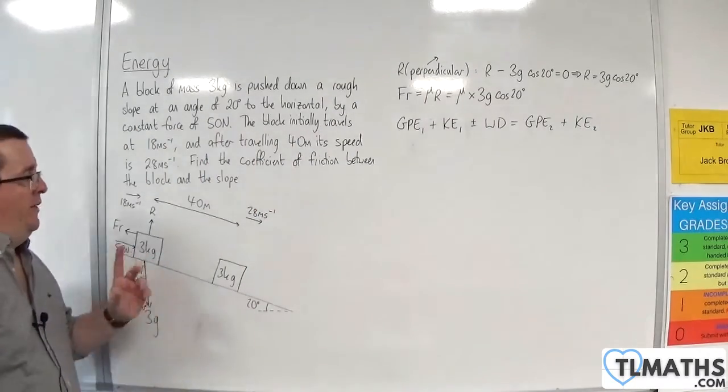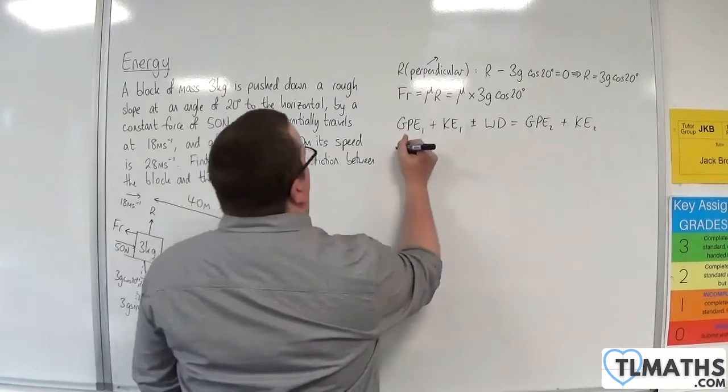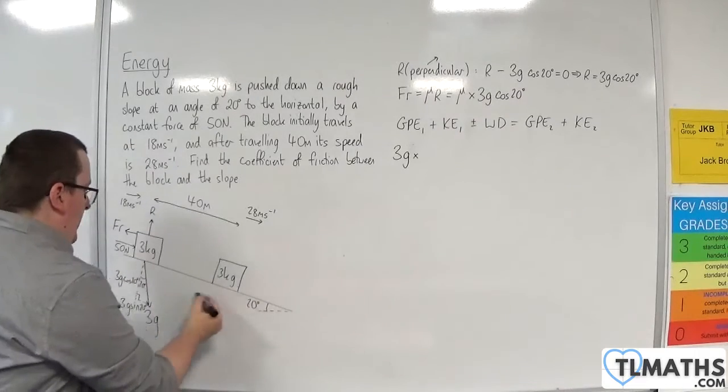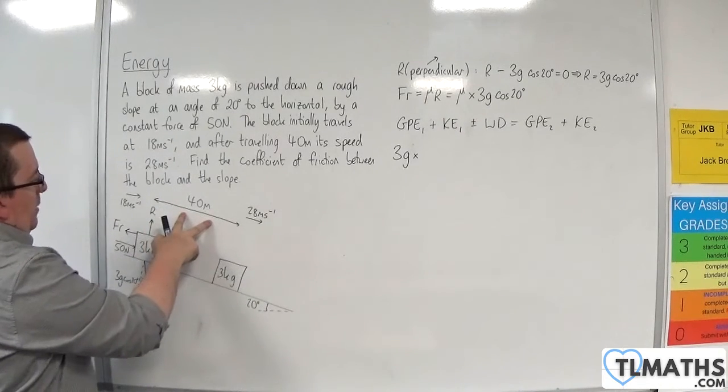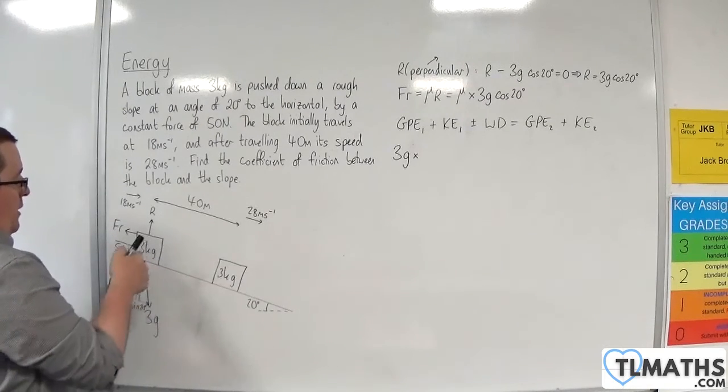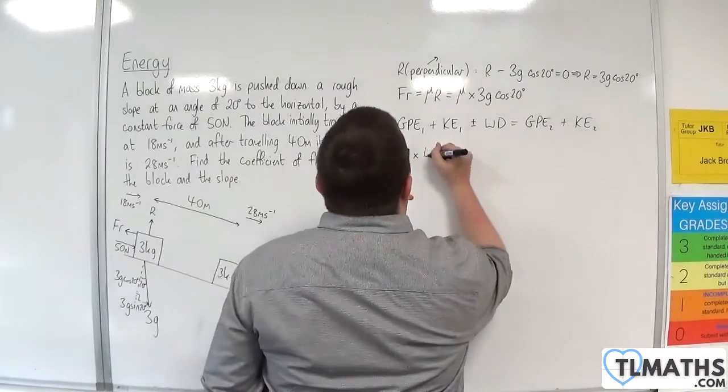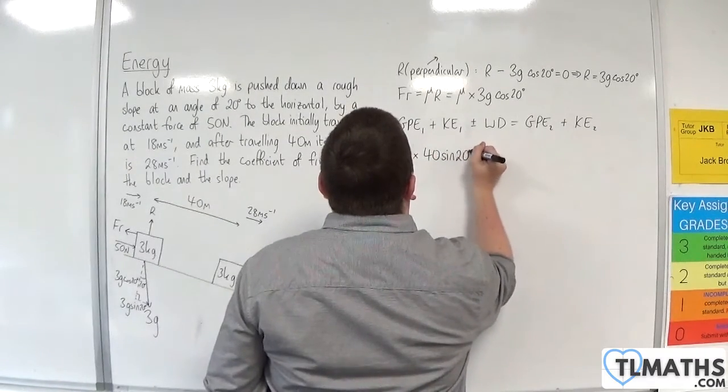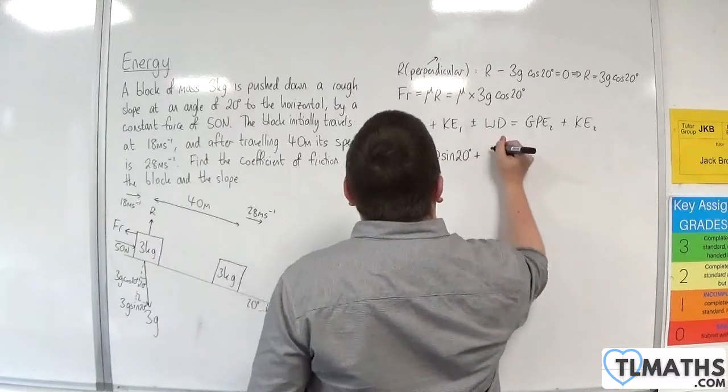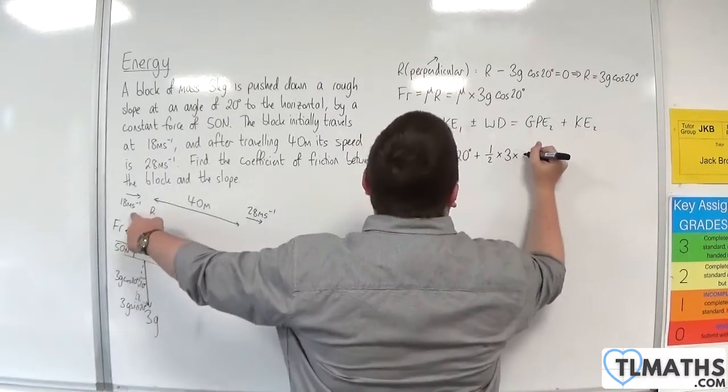So the initial gravitational potential energy will be M times G times H. Now, M is 3, so we've got 3G times H. Now, think of this as a big triangle. The hypotenuse is 40, so the height, the vertical height between the two positions of the block will be 40 sine 20. So 40 sine 20 plus the initial kinetic energy, so 1 half times 3 times V squared, so 18 squared.